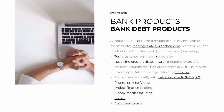Term loans include mortgages, auto loans, and others — for individuals and corporations for any use they may have. Then we have Revolving Credit Facilities, or RCFs. These are facilities that allow a borrower to borrow and repay as many times as possible, as long as you don't cross a certain threshold. These can include overdraft facilities, liquidity facilities — which are usually for emergencies — credit cards, or forms of lending known as ABL, or Asset Based Lending.